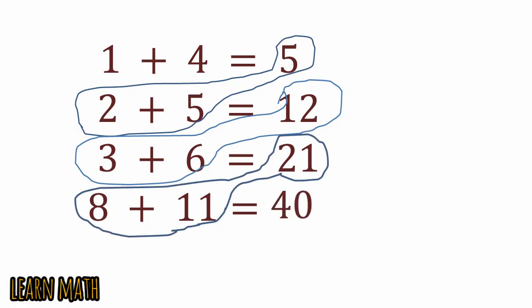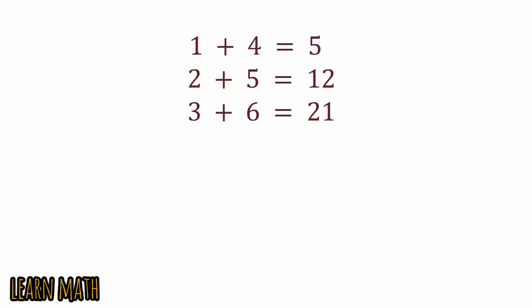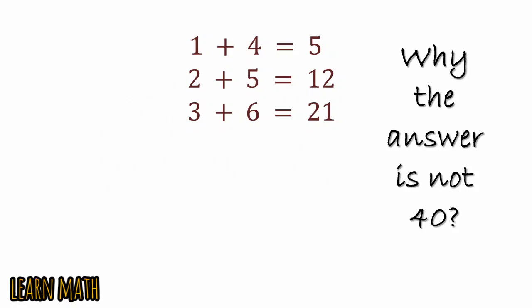But this is a wrong approach. Why is the answer not 40? Look at the puzzle. You will see that on the left side 1, 2, 3, it's following a pattern, and similarly on the right side it's following 4, 5, 6. So the next term will be 4 plus 7, then 5 plus 8.